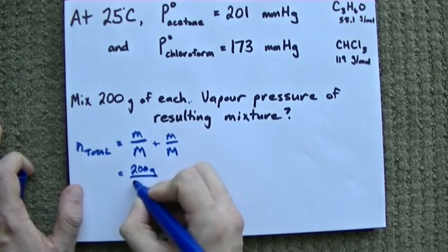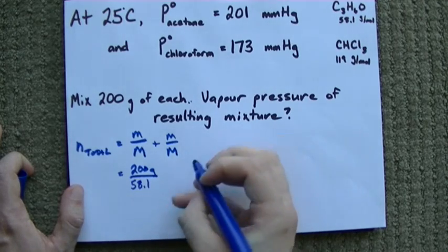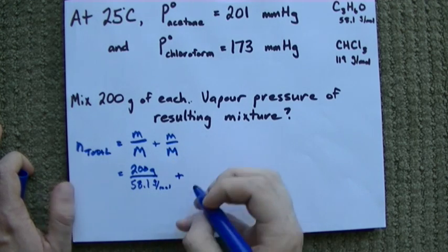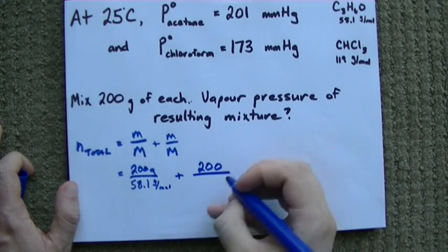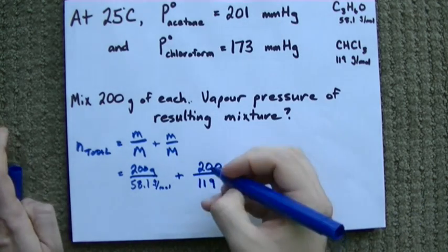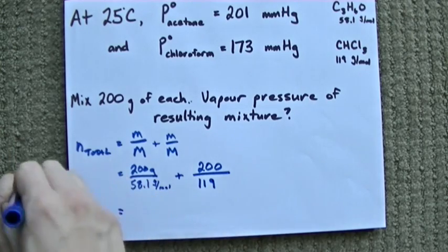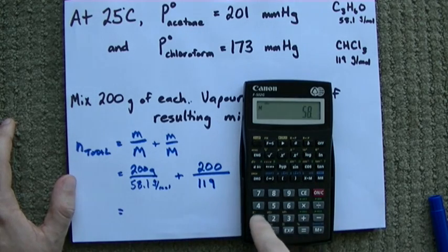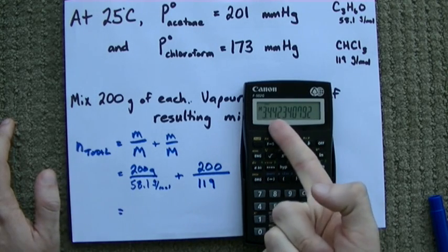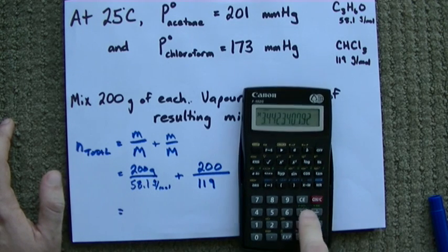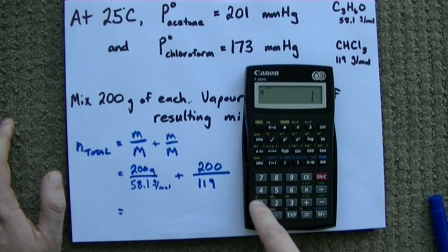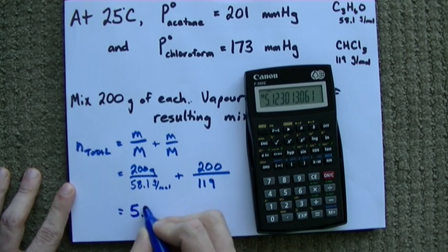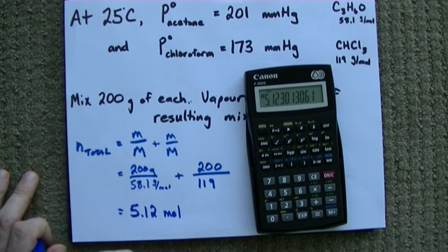200 grams of acetone gives me 200 over 58.1 grams per mole. Whatever number that turns out to be is the number of moles of acetone. And we have 200 over 119 grams per mole of chloroform. Let's figure this out. 200 divided by 58.1 is 3.44 moles of acetone. And we're going to add 200 over 119. Combined, acetone and chloroform, we have 5.12 moles of stuff.